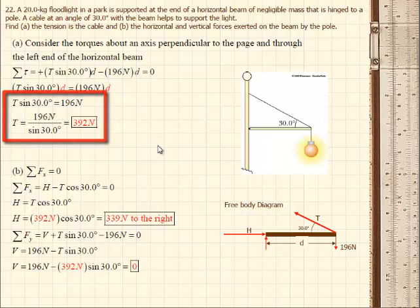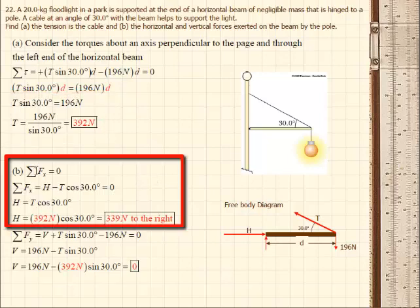So now we can move to the second part of the problem. To do this, let's first sum all of the forces in the x direction. Set that equal to zero. So everything in the x direction is going to be the horizontal. So the horizontal force of the pole pushing against the vertical pole, minus the tension, the component of the tension, cosine 30 degrees.